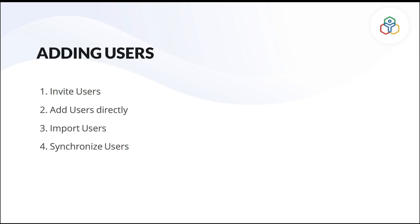There are four different ways using which you can add users. First, you can send email invites directly to users. Second, you can add users directly. Third, you can import users in bulk. Finally, you can sync users from other applications. In this video, we will focus on the first two: how to send invites to add users and how to add them directly to your Zoho People account.